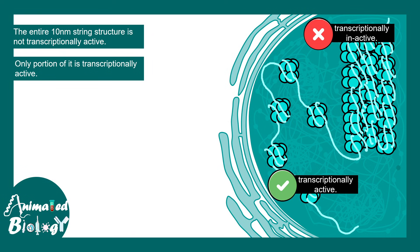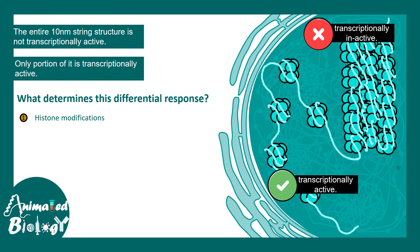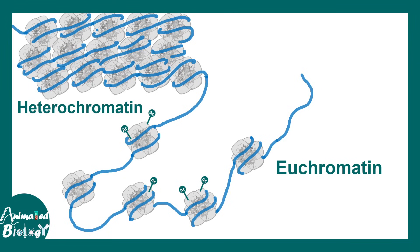There are specific regions which are transcriptionally inactive. What factors determine this differential response? There could be specific modifications present on histones in the nucleosomes that change chromatin accessibility. There could be different histone variants, nucleosome remodeling complexes that alter the positioning and composition of nucleosomes, or DNA methylation that changes the accessibility of DNA wrapping around the histones.